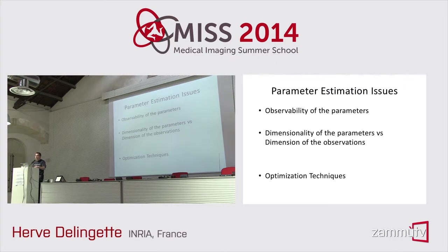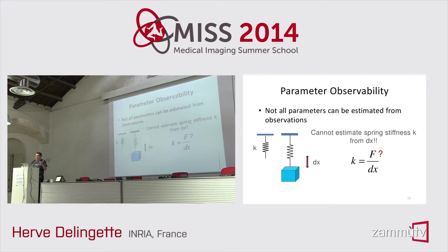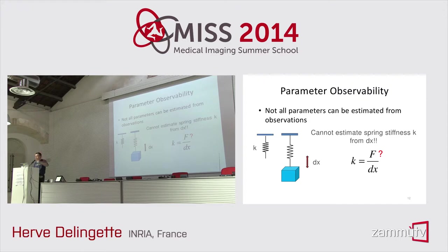A common issue with model personalization is the observability of parameters. A simple example: a spring attached to the roof with a mass. To estimate stiffness K, you need the elongation delta-X and the applied force — known from the mass. If you have two springs in parallel, you can only estimate the sum of the two stiffnesses. If you have two springs in series with a tilting bar, the angle gives you the ratio K1 over K2.